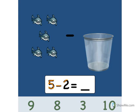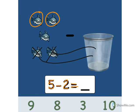5 minus 2 equals what? Let's count out 2 to take away. 1, 2. Two sharks in the trash can. What does that leave us with? Let's count. 1, 2, 3. Point to the number 3. Good. 5 minus 2 equals 3. Great.